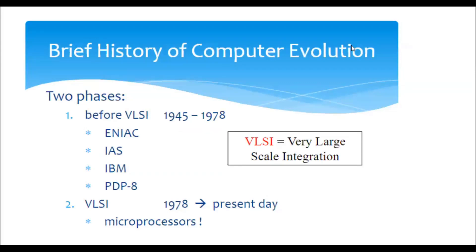ENIAC stands for Electronic Numerical Integrator and Computer. It was built by J. Presper Eckert and John W. Mauchly at the University of Pennsylvania. ENIAC was intended as the primary all-purpose electronic computer, planned by Mauchly and Eckert in 1942, and the machine was completed in 1945.